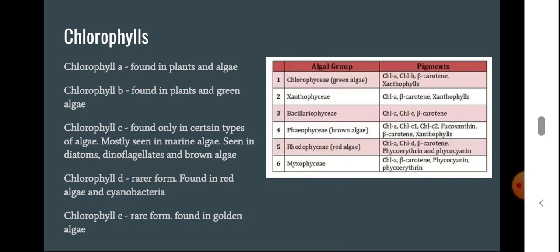Chlorophyll e is again a rare form found in golden algae. A chart shows the pigments across algal groups. In Chlorophyceae (green algae): chlorophyll a, chlorophyll b, beta-carotene, xanthophyll. In Phaeophyceae (brown algae): chlorophyll a, chlorophyll c1, chlorophyll c2, fucoxanthin, beta-carotene, xanthophyll. In Rhodophyceae (red algae): chlorophyll a, chlorophyll d, beta-carotene, phycoerythrin, phycocyanin. Chlorophyll a is present in almost all classes, but other pigments differ.